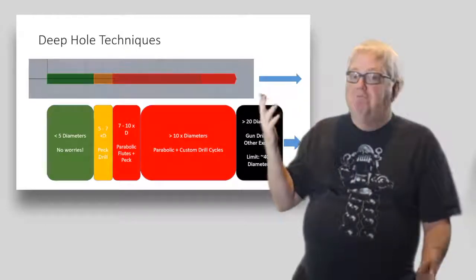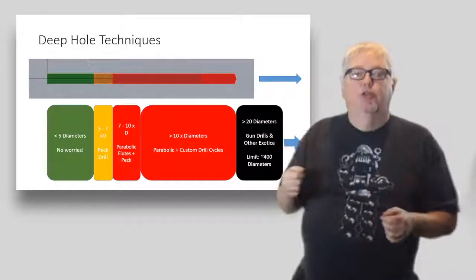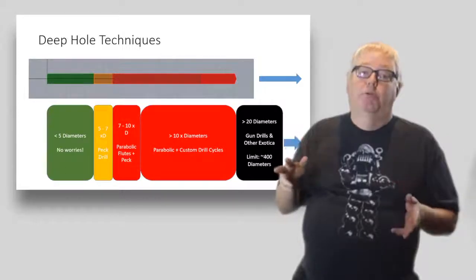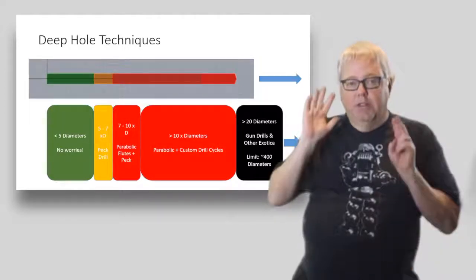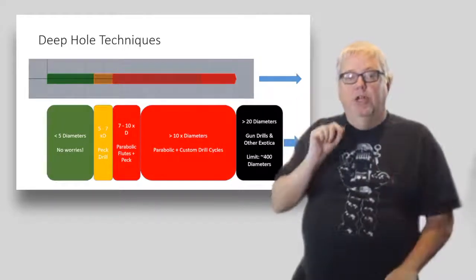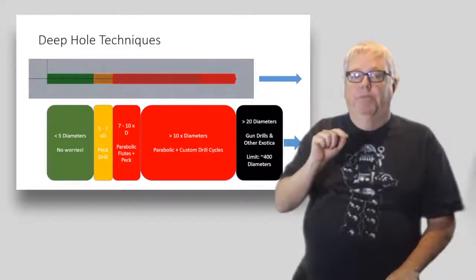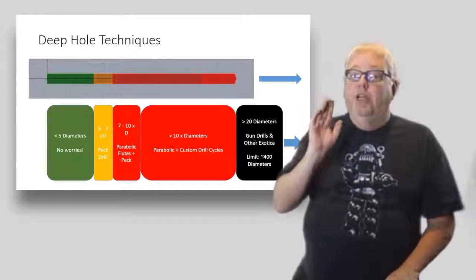It summarizes the techniques you'll need to use with progressively deeper holes. For holes less than five diameters deep, no worries—just drill straight down with proper feeds and speeds and you should have no problems. In the range of five to seven diameters, you'll need to start peck drilling.